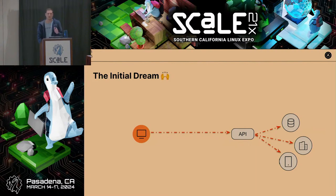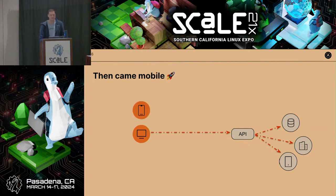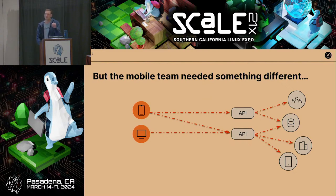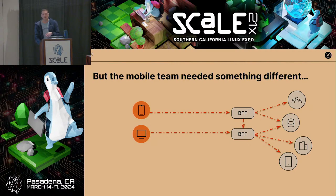We all start with the initial dream: a little website, an API, everything's great — maybe a simple monorepo. It starts becoming successful. Then we need a mobile app. But the mobile team says the original API isn't good enough — they need some special bespoke endpoints. So they start building their own API, maybe having their API talk to yours. Now you have this backend-for-frontend world that's started to evolve.